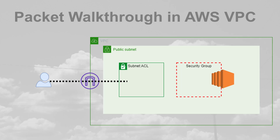Once inside, my packet is routed to the appropriate subnet where it usually has to be accepted by a network ACL. The default network ACL is very permissive, so usually this is not a problem. Next, before I get to the EC2 instance, I normally also have to be accepted by a security group attached to it — and by default, those security groups deny ingress traffic, so we have more chance of being dropped there.